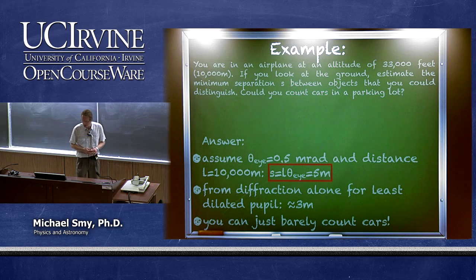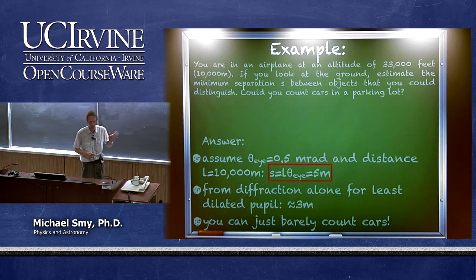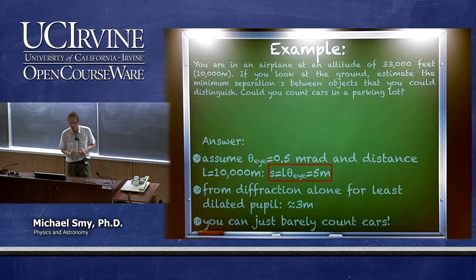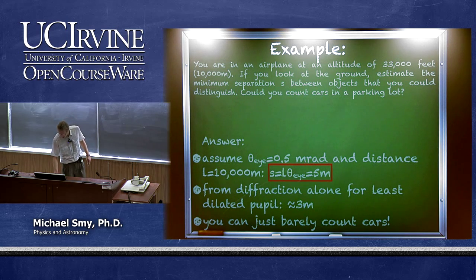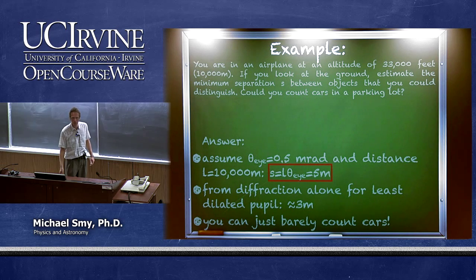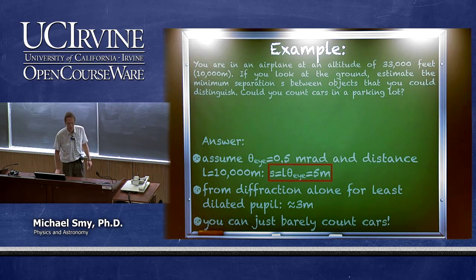From diffraction alone, for the least dilated pupil in bright sunlight, we get 3 meters — so very good eyes can do slightly better. This question is also important for animals like eagles trying to distinguish small animals on the ground.